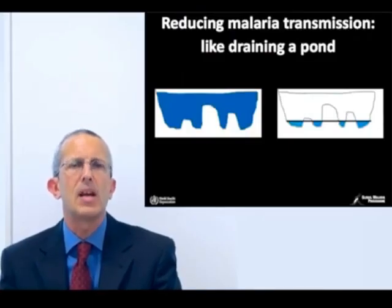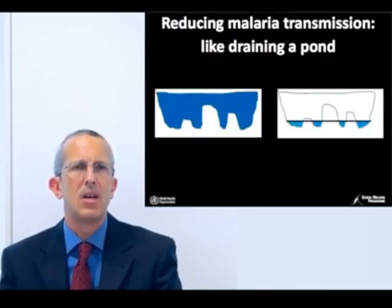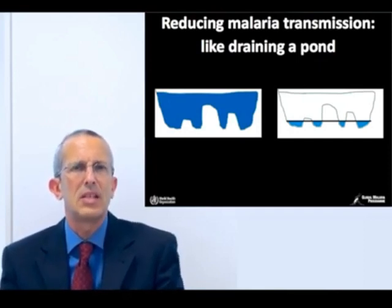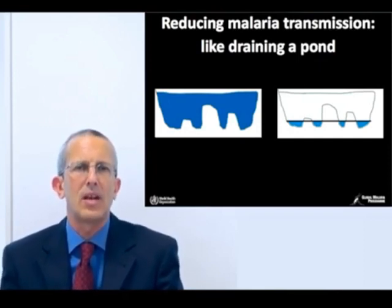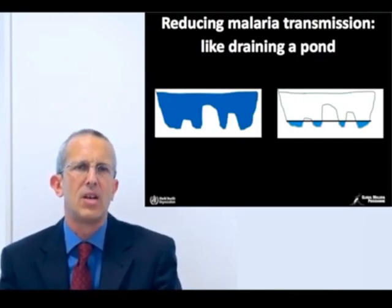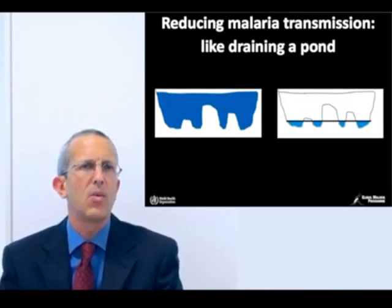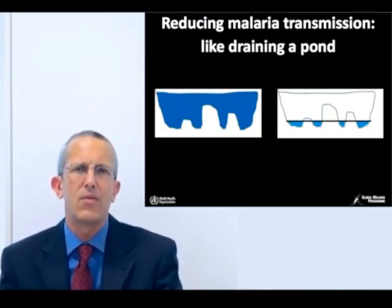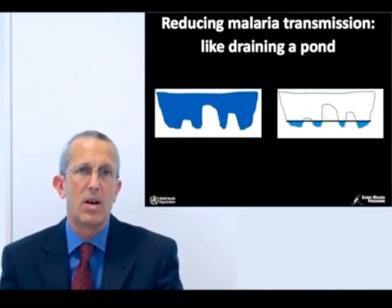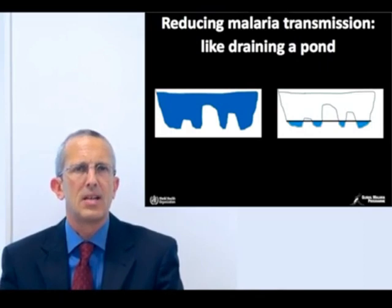Reducing malaria is like draining a pond. On the left hand side of this graph you can see what it looked like looking down into that pond ten years ago. If the blue water is malaria, there was malaria everywhere where there was malaria risk.